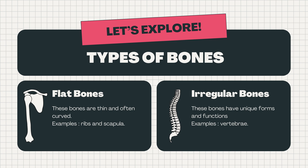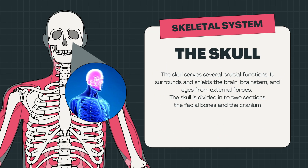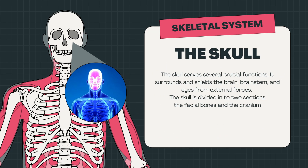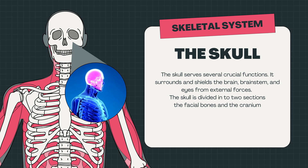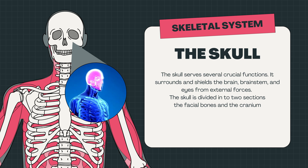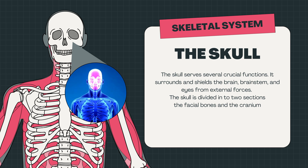The human skull serves several crucial functions. It surrounds and shields the brain, brainstem, and eyes from external forces. The skull is divided into two sections: the facial bones and the cranium.